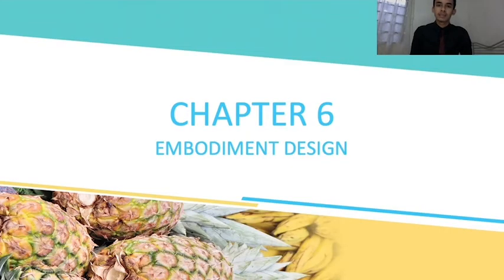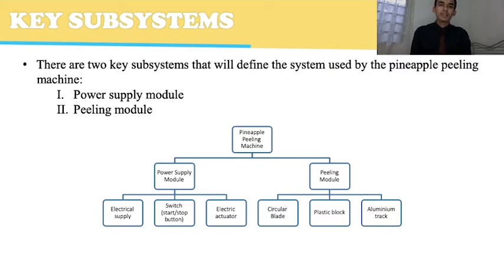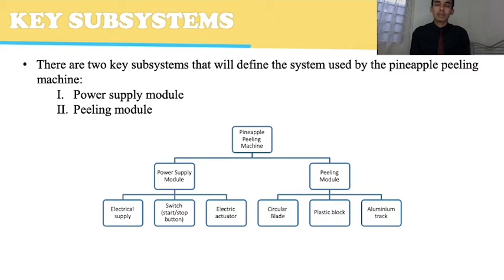Next, Chapter 6: embodiment design. Key subsystems. There are two key subsystems that define the system used by the pineapple peeling machine: the power supply module and the peeling module. The power supply module consists of electrical supply, a start-stop switch button, and an electric actuator. The peeling module includes a circular blade, plastic block, and aluminum trap.